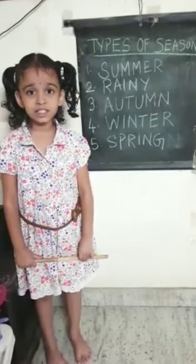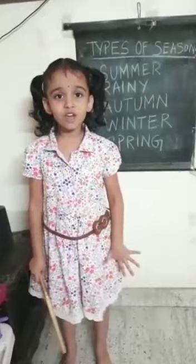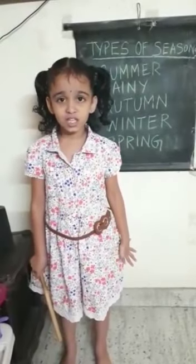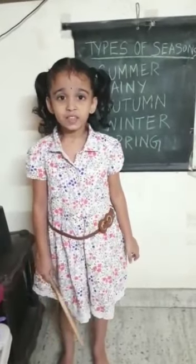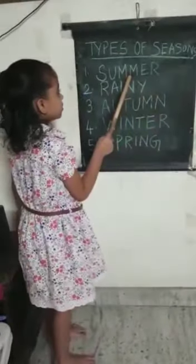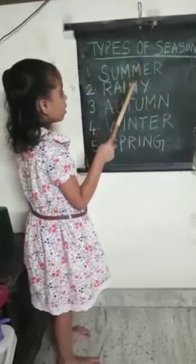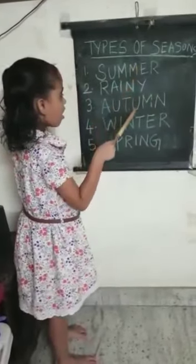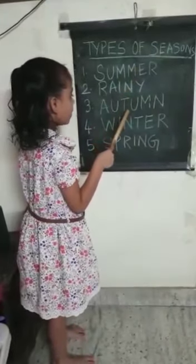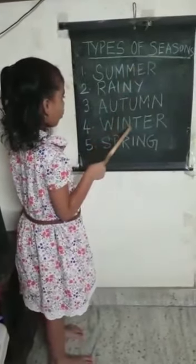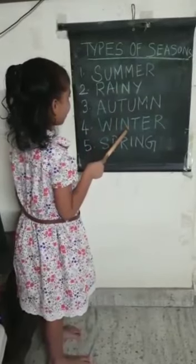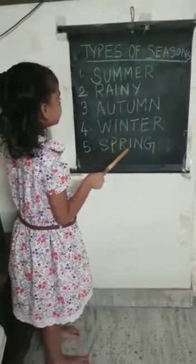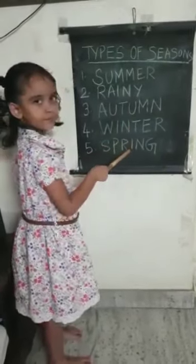There are five types of seasons. They are summer, rainy, autumn, winter and spring season.